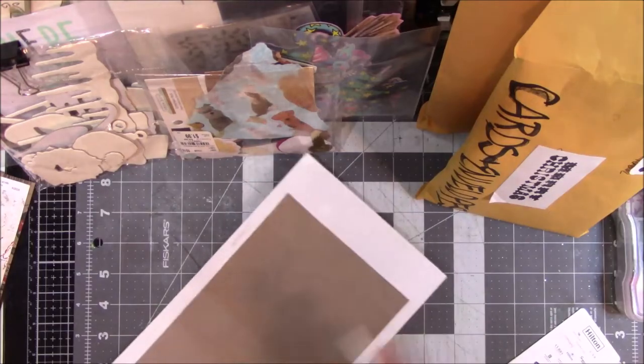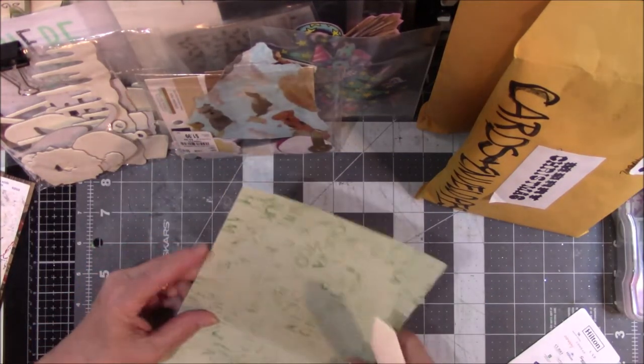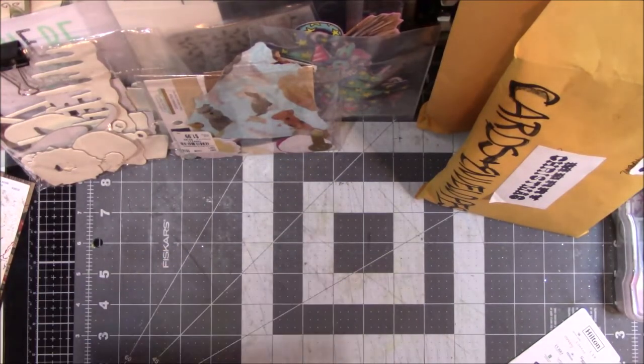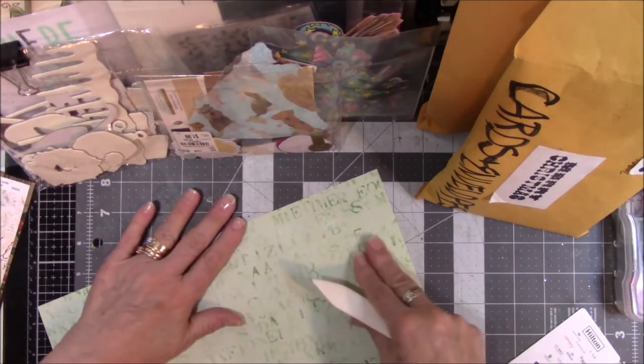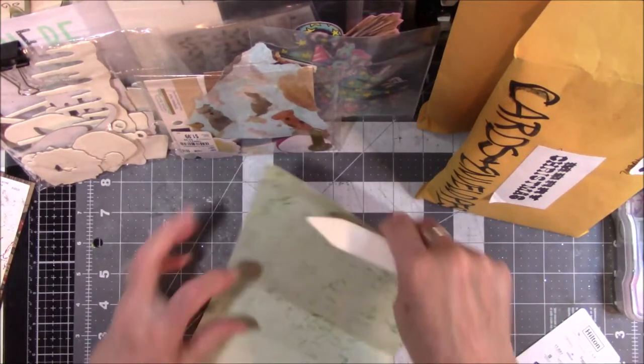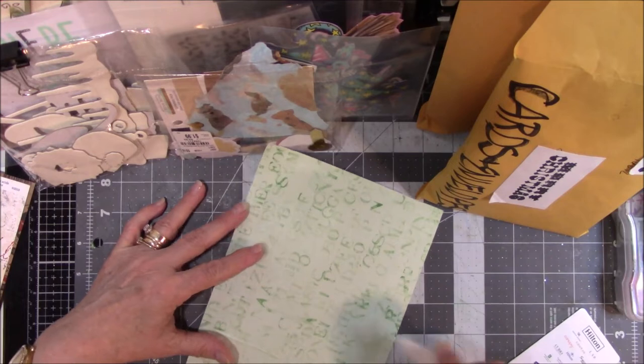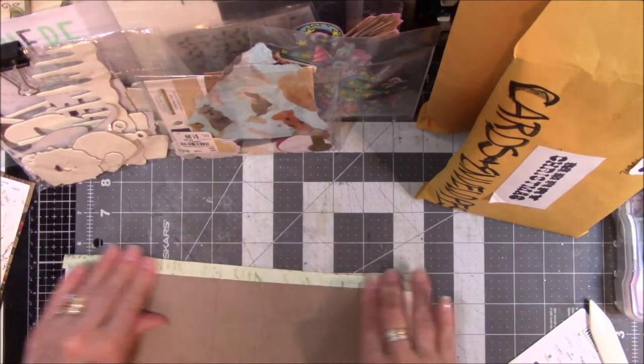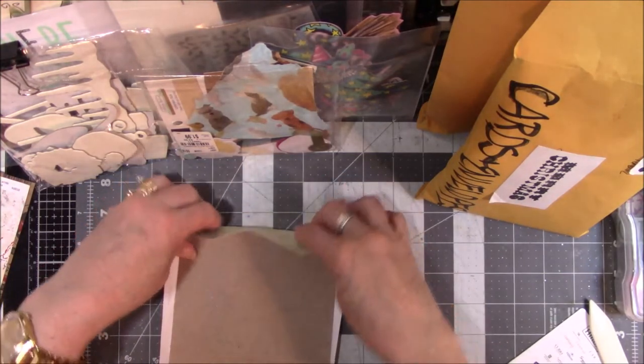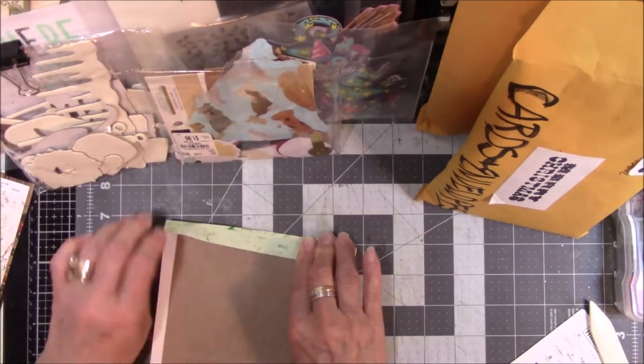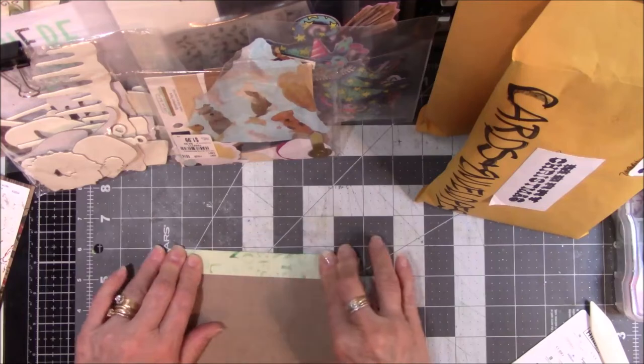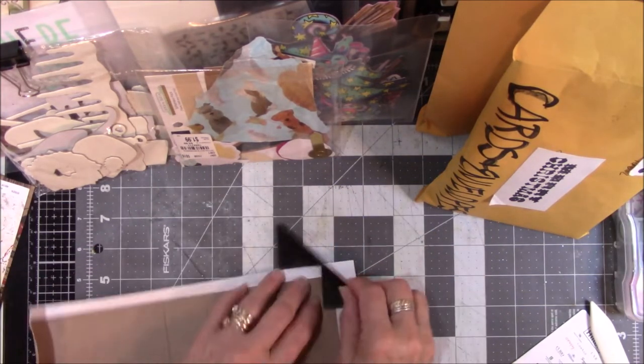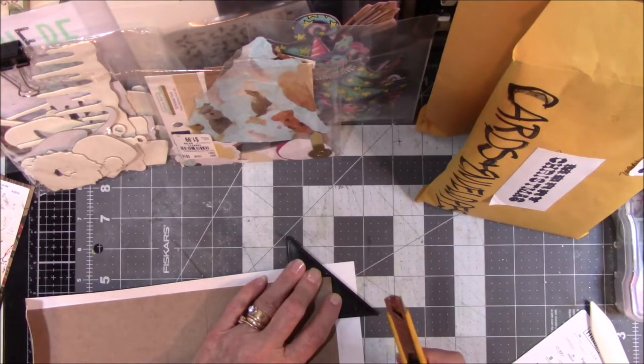And then I'm going to smooth it out with a bone folder because I don't want my paper to pucker. All right, so this is not a three-piece book, but I do want to find where the fold is here and give it a little extra nudge. There we go. And I'm gonna do the inside stuff and then I'm going to put it under some heavy weight.